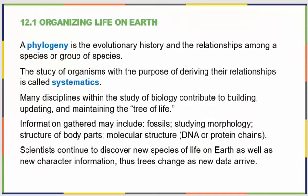When we talk about organizing life on Earth, we're looking at phylogenies — evolutionary histories that show us the relationship among species or even groups of species. When we figure out these relationships, we're looking at the study of science known as systematics. There are actually a lot of disciplines in biology that contribute to the creation of the tree of life, but if that's the sole goal of your study, we say that you're working in systematic biology.